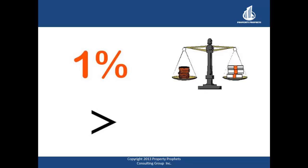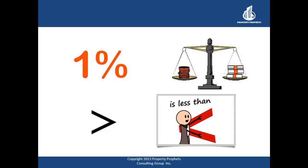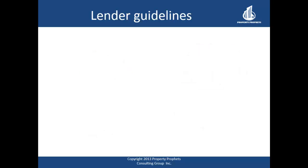Greater than 1 means you have money left over, and less than 1 means you don't have enough to pay the mortgage and money is coming out of your pocket — and that's what lenders don't like. Most lenders' guidelines require an investment property or overall portfolio to have a DCR of 1.1 or 1.2 or higher before they actually give you a mortgage.